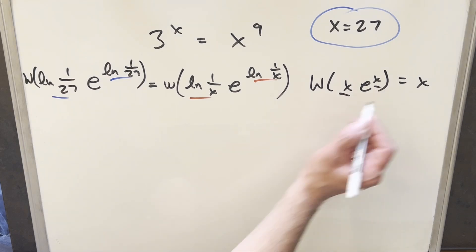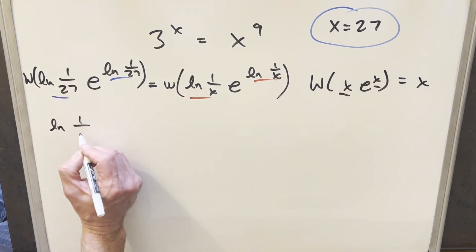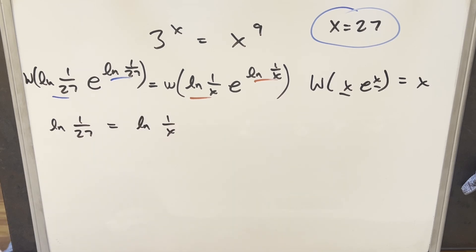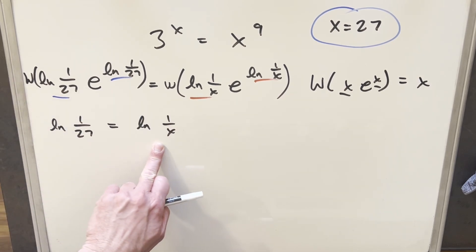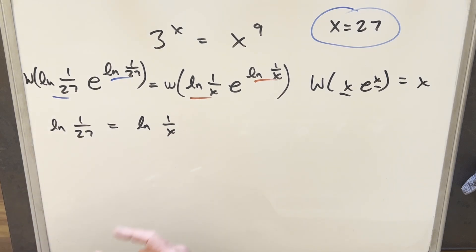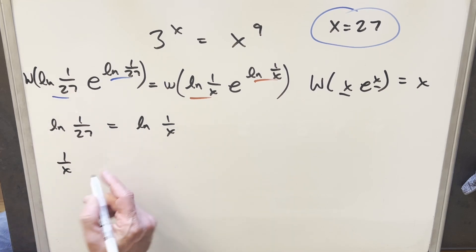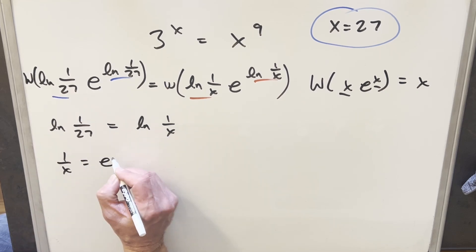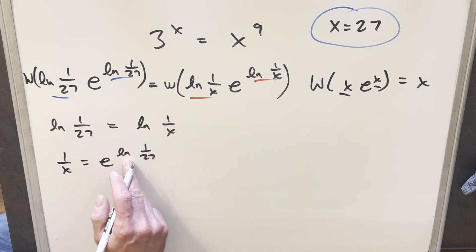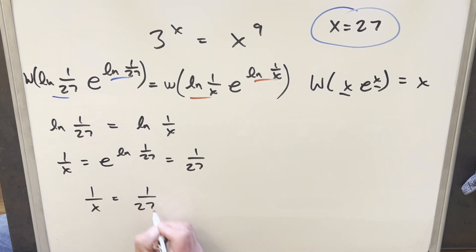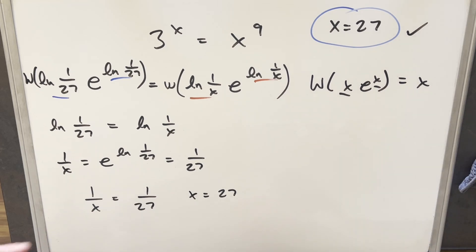When we apply the Lambert W function, we just get back our input. So on the left side we get ln(1/27), and on the right side this becomes ln(1/x). We're headed toward the same answer again: using log properties, we rewrite this as 1/x = e^(ln(1/27)), and e^(ln(1/27)) gives us 1/27. So 1/x = 1/27 gives x = 27 — a good double check, but it still doesn't tell us if there are other solutions.